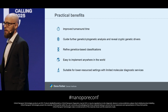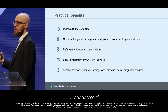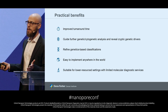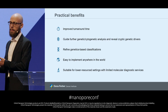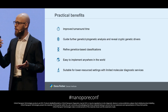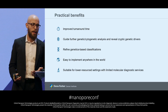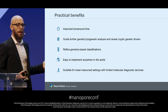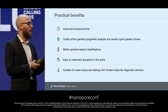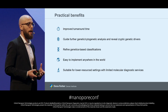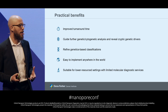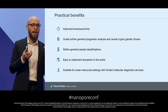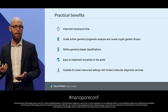What are the practical benefits of this approach? First is the turnaround time — we are moving acute leukemia diagnostics from several days to a few hours. We think this can guide further genetic analysis and may reveal cryptic events like the DUX4 rearrangement. We can also refine genetic-based classification, and this framework is easy to implement anywhere in the world, especially in settings with limited resources and access to molecular diagnostics.